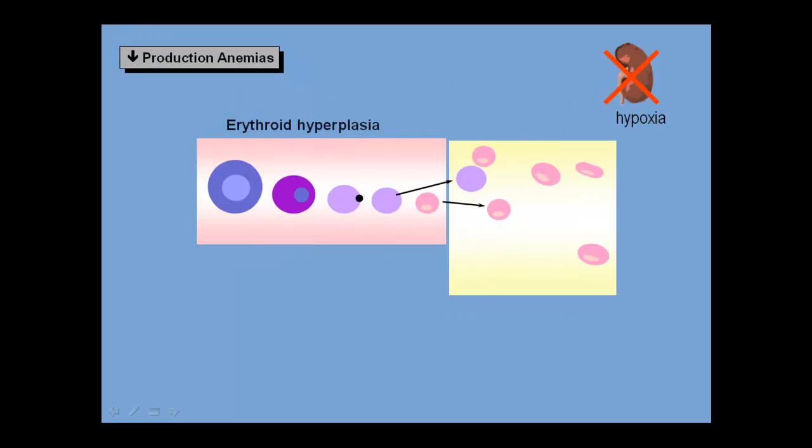In renal failure, erythropoietin production is limited, there is no erythroid hyperplasia, no exuberant reticulocyte response, and you end up with anemia with a low reticulocyte count, the classic pattern of decreased production anemia.